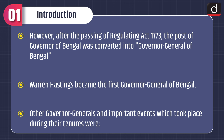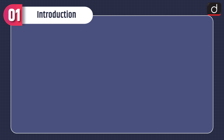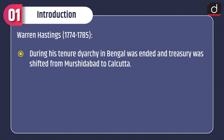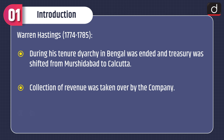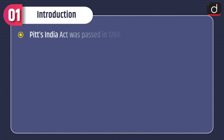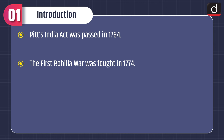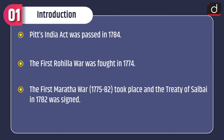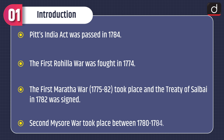The first Governor General of Bengal was Warren Hastings, 1774 to 1785. During his tenure, diarchy in Bengal was ended and the Treasury was shifted from Murshidabad to Calcutta. Collection of revenue was taken over by the Company. In 1774, the Supreme Court was established in Calcutta. Pitt's India Act was passed in 1784. The First Rohilla War was fought in 1774. The First Maratha War, 1775–82, took place and the Treaty of Salbai in 1782 was signed. The Second Mysore War took place between 1780 and 1784.